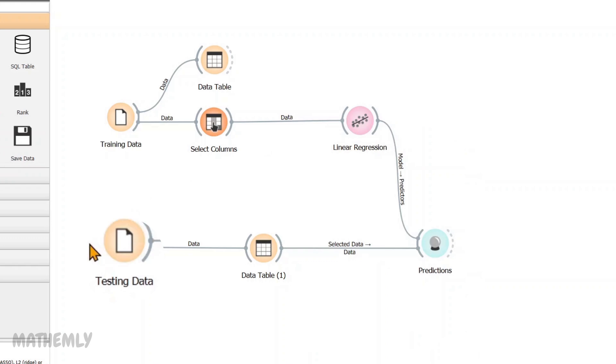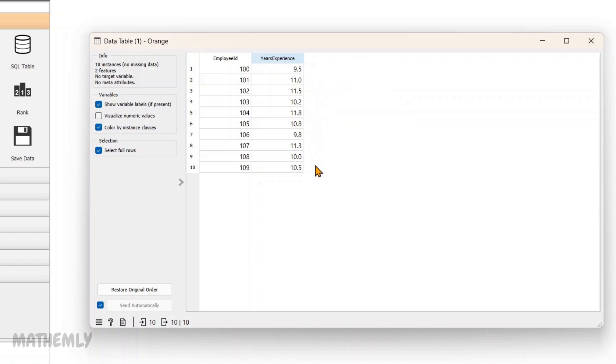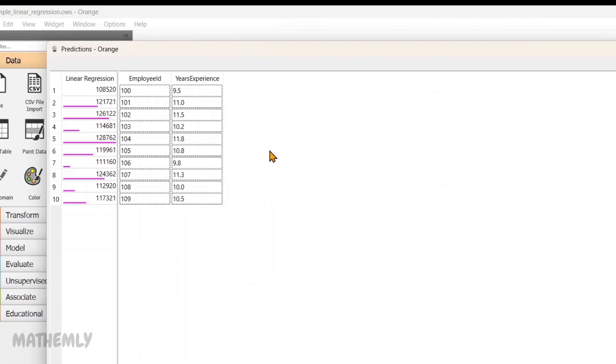And then, I have added a new file widget called TestingData, where I have included 10 rows with the same feature column as the training data. This testing dataset will help us evaluate how the model predicts salary based on the input feature. Now, let's see how the model performs on this new data. Next, I have added the Predictions widget to evaluate how the model performs with the testing data. For example, in the first row, the employee ID is 100. The years of experience is 9.5 years. Based on these inputs, the model predicts a salary of 108,520. By looking at these results, we can see how years of experience affect the salary and how well the model performs. With this, the workflow is complete, showing how orange data mining helps build and test predictive models easily.